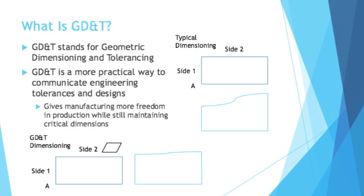GD&T prevents a lot of these mistakes from occurring. Look at the two images on the bottom. The image on the left is a very similar setup, except it adds in the flatness symbol for side 2. That flatness symbol would say something like 0.05. So you would still have the dimension on side 1 — 3 inches plus or minus 0.25 — but because of the flatness constraint of 0.05 on side 2, you would get nowhere near the variance. Of course, there's always a little bit of variance in the real world, but it wouldn't be as dramatic.